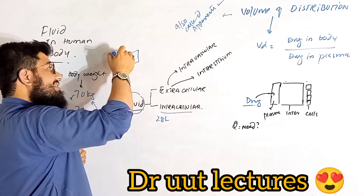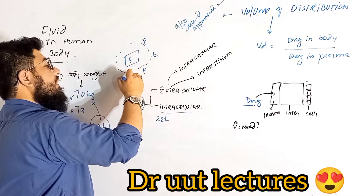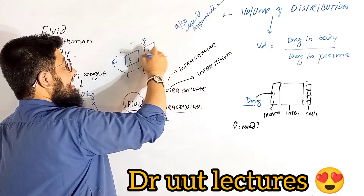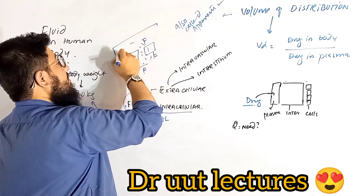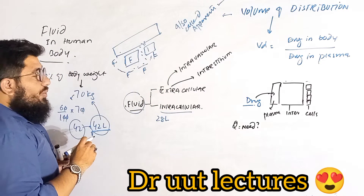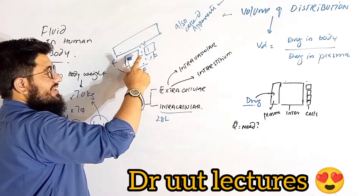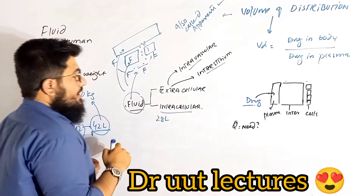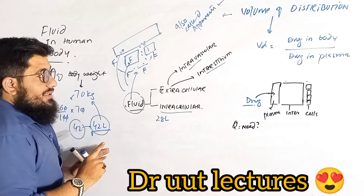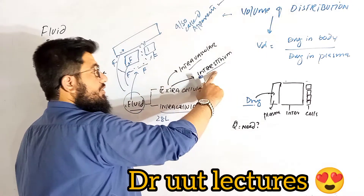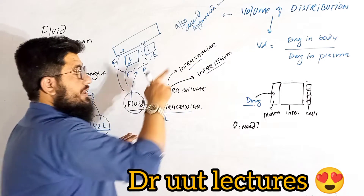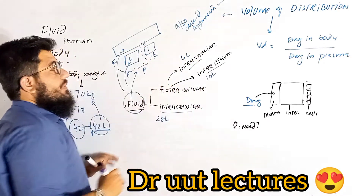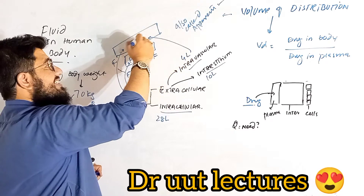Inside the cell we have fluid, and surrounding the cells we also have fluid. In humans, between the cells there is a space called the interstitium, and along with that there are blood vessels. So this fluid distributes itself into three spaces: inside the cell (intracellular), in the space between cells (interstitium), and inside the blood vessels (intravascular fluid). Of the 42 liters: 28 liters are intracellular, 10 liters are interstitial, and 4 liters reside in the blood vessels as intravascular fluid.